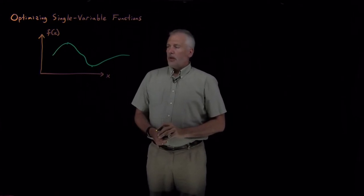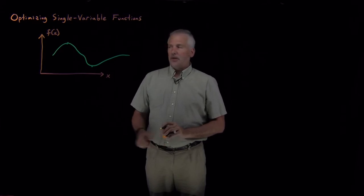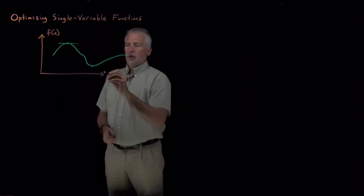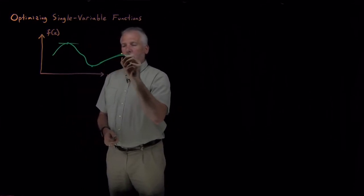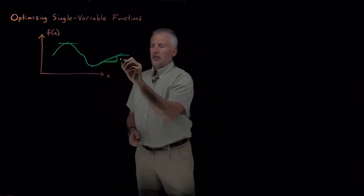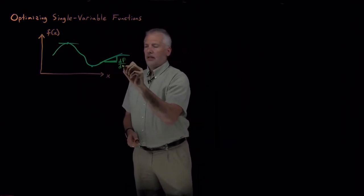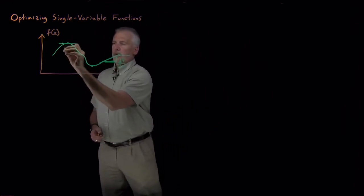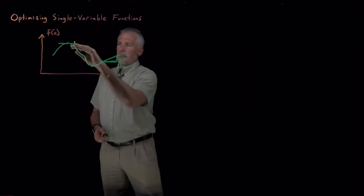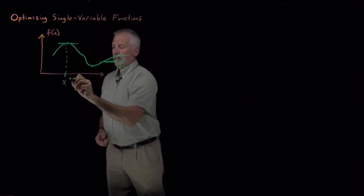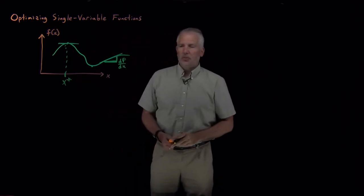As you most likely remember from calculus class, the way we can detect whether the function is at a maximum or at a minimum is to look at the slope of that function. We can calculate the slope anywhere we want. The slope right here, change in f over change in x, tells us the slope of that function, but when the slope is zero, when the slope is flat like it is right here, then that's a sign that we're at some sort of special point in that function.